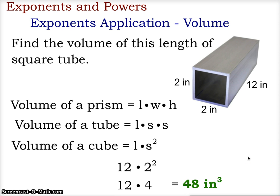In this case, we only used the exponent on the sides of the front face of the tube, and that was 2 times 2, or 2 squared. And that had to be multiplied by the length, 12, and that's where we get the volume of that square tube at 48 inches cubed.